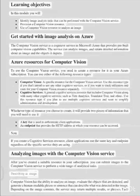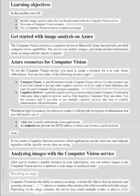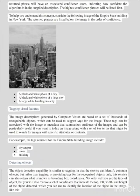Describing an image: computer vision has the ability to analyze an image, evaluate the objects that are detected, and generate a human-readable phrase or sentence that can describe what was detected in the image. Depending on the image contents, the service may return multiple results or phrases. Each return phrase will have an associated confidence score, indicating how confident the algorithm is in the supplied description.